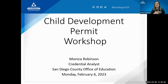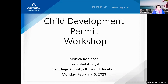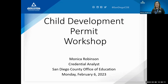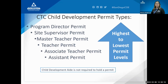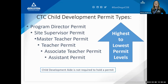Questions can go in the chat and we'll monitor them. So, child development permit types — there are a few different levels and we're going to talk about all of them today from the highest to the lowest. The highest is the program director permit, then site supervisor, master teacher, teacher, associate teacher, and the assistant permit.